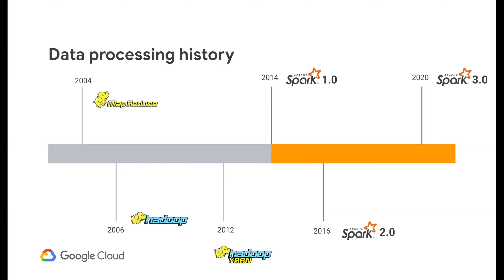Spark has seen several evolutions since the original release in 2014. In 2016 was the release of Spark 2.0, which introduced a new API that made data processing much more efficient. Then 3.0 came out in 2020 with a lot of under-the-hood improvements. One of the nice things about Spark 3 is that much of the changes were not at the API level — a lot happened underneath the hood. Migrating to it was not as complex as going from 1 to 2. And even today in 2022, Spark is continuing to grow. Databricks is doing very well and Google Cloud is doubling down on our Spark efforts.